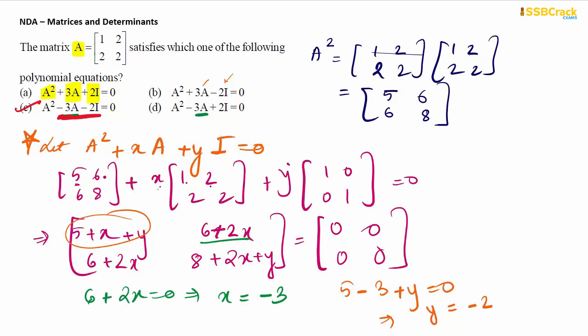This shortcut is a very important time-saving technique for NDA. Instead of verifying every option individually, solve for X and Y algebraically to identify the correct polynomial equation directly.